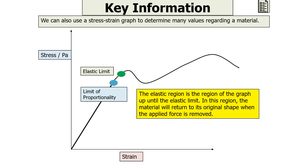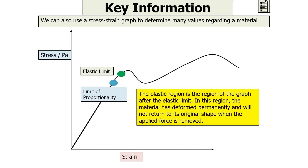The elastic region is the region of the graph up until the elastic limit — in this region, the material will return to its original shape when the applied force is removed. The plastic region is the region after the elastic limit — here the material has deformed permanently and will not return to its original shape when the applied force is removed.